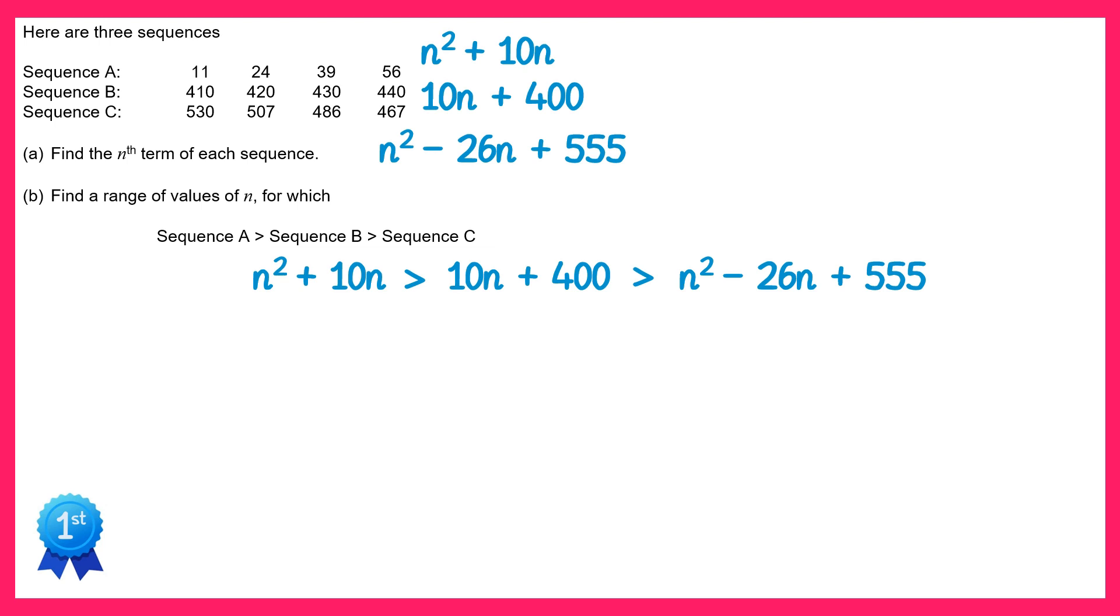Let's take a look at the first part of this inequality here. If you subtract 10n from both sides, then the 10n's will cancel and you're just left with n squared is greater than 400. If you then subtract 400 from both sides, you get n squared take away 400 is greater than 0. You can factorise this; it's the difference of two squares. You get n plus 20 and n minus 20 is greater than 0. The solution to this inequality comes in two parts: either n is less than negative 20, or n is greater than positive 20.